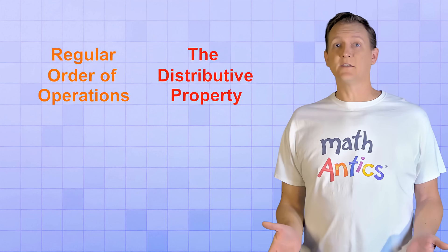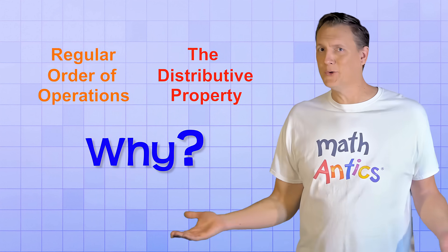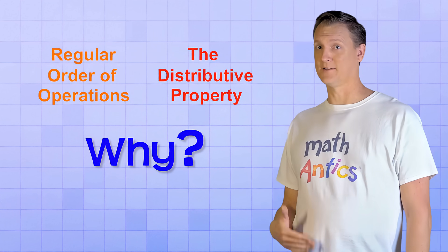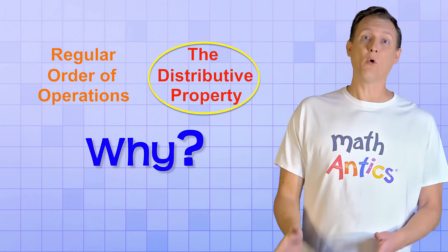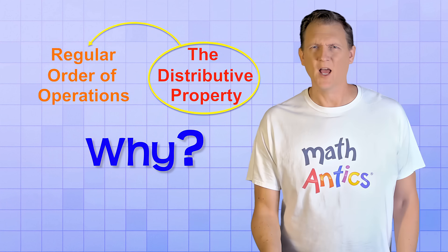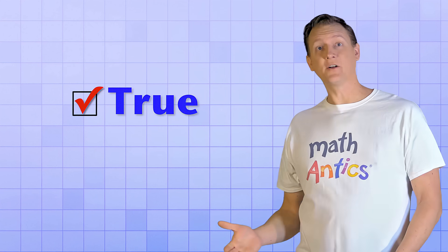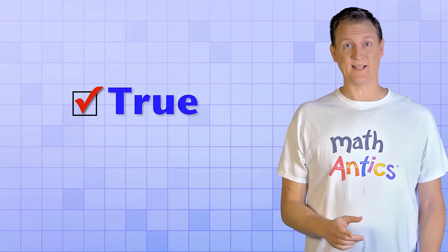We have two ways to get to the same answer. But why do we need two different ways to do the same calculation? And it seemed like the Distributive Property way was even more complicated than the regular way. Why would we ever want to use it? That's a good question. And it's true.